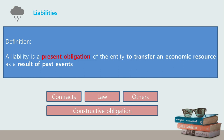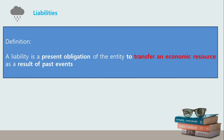The second criterion is the obligation to transfer an economic resource. Similar to an asset, the potential to transfer an economic resource need not be certain nor likely. In the case of provisions for warranties, for example, it is not certain that there will be an actual warranty claim in the future, but it still has to be recognized as a liability.